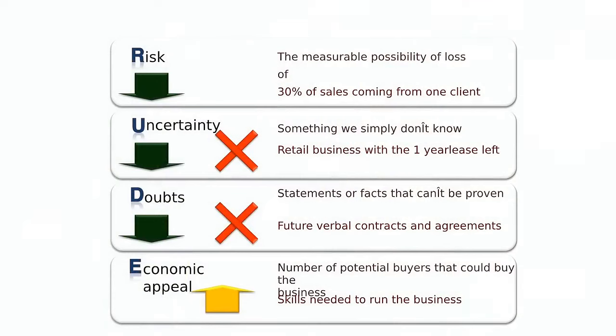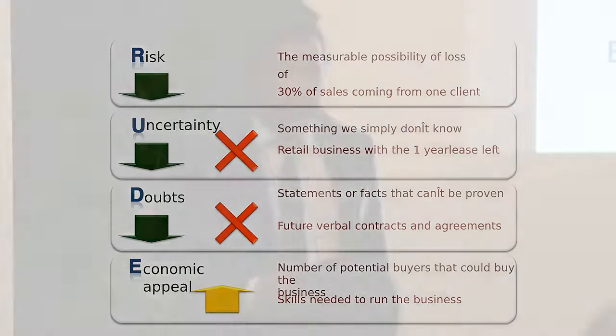Doubts are statements and facts that can't be proven. For example: 'I've got this contract — it's definitely coming my way,' but there's no way of proving it. A big part of this in cash businesses is money that hasn't been banked — a portion of revenue that wasn't recorded properly. It's impossible to sell with doubts like that, so they need to be reduced or eliminated.